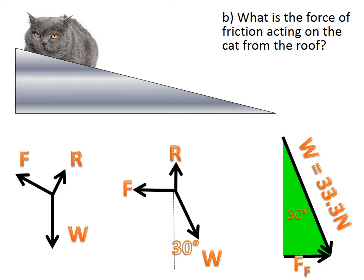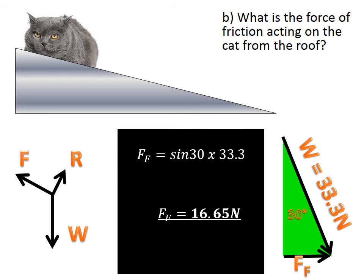Force of friction there is equal, well that horizontal component of weight will be equal to friction acting at 30 degrees. So sin 30 times 33.3 gives us a force of friction equal to 16.65 newtons.